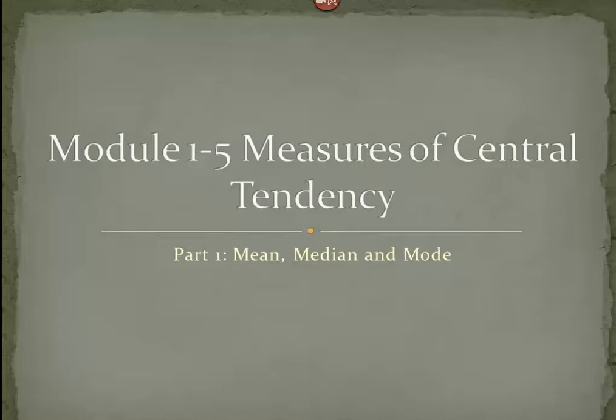These numbers we call the measures of central tendency, and they include three numbers: the mean, the median, and the mode. All of which have their advantages and all of which have their downsides, but all of which have an appropriate place as measures of central tendency.